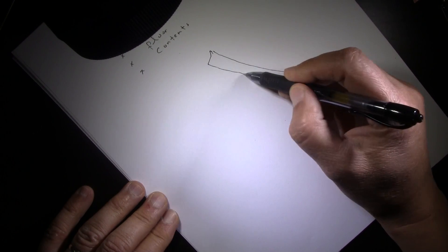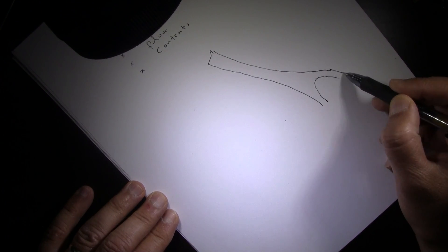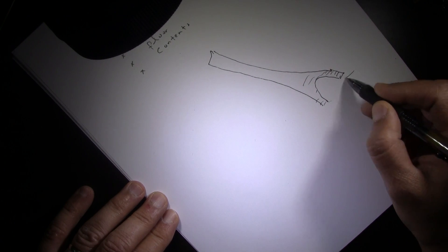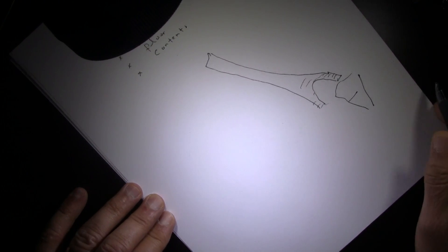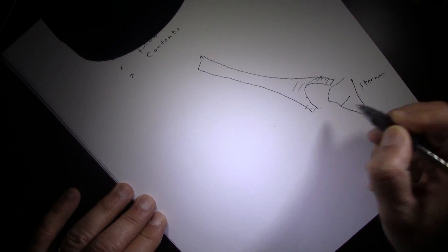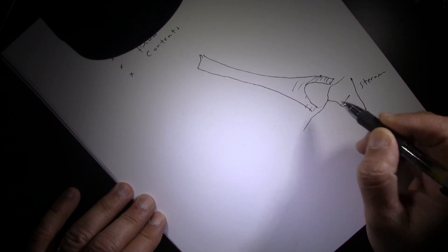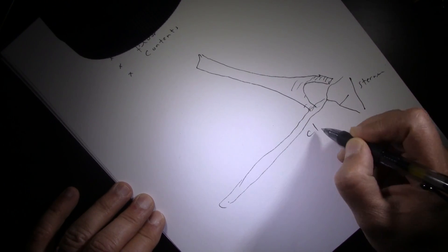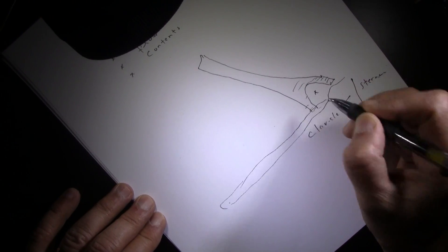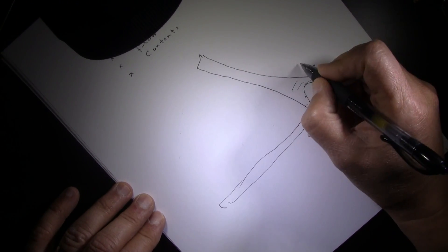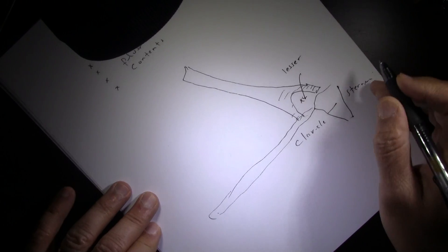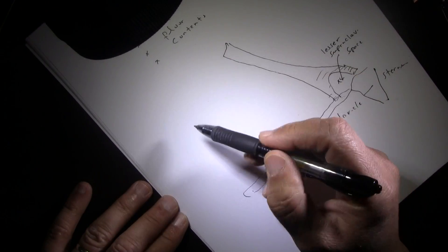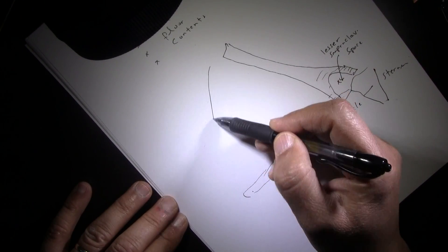The boundaries of the posterior triangle are made by two muscles. The first is the sternocleidomastoid muscle, which has two origins: one from the sternum (manubrium) and one from the clavicle. There is a tiny space here called the lesser supraclavicular space. The second muscle is the trapezius muscle.